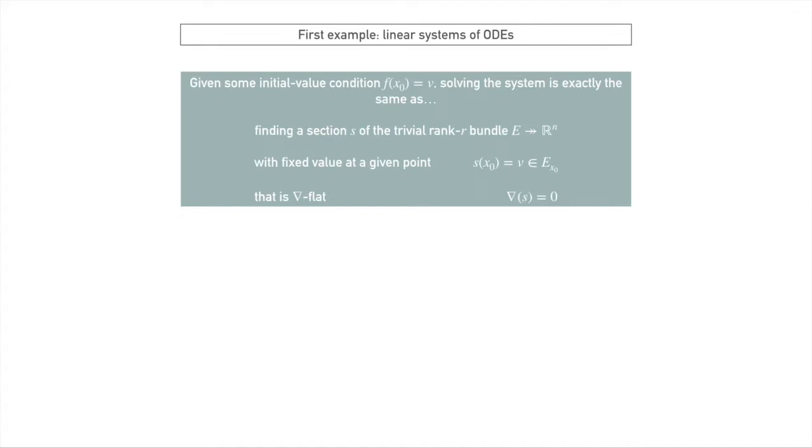What do we mean by that? That just means that nabla of s is zero. This last thing is a cheating shortcut. We wrote down our linear system of ODEs as d plus omega bar f equals zero, so saying that something is nabla flat is exactly saying it's a solution to this equation, which is exactly saying it's a solution to our linear system of ODEs. So flat sections of a connection correspond to solutions of an initial value problem. That's one way of thinking about, or a good first stepping stone to, what is a connection.